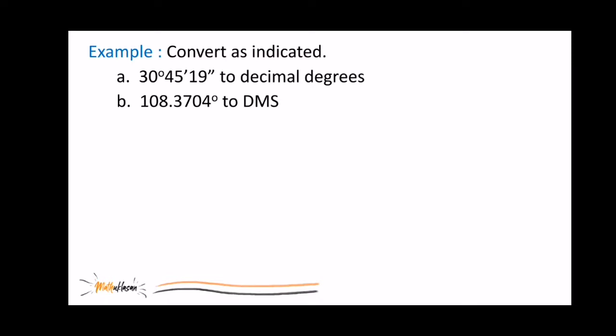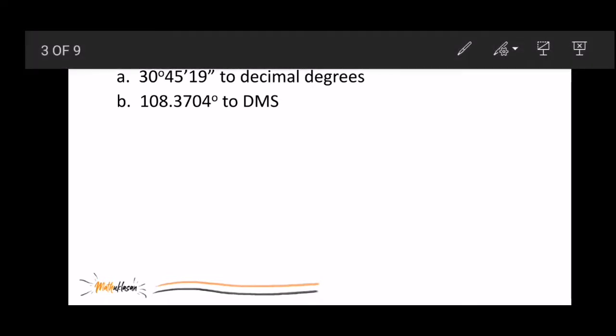Let's try converting each unit. In letter A, we need to convert this DMS value to decimal degrees. And to do that, all we need to do is to separate 30 degrees. Tapos, kailangan lang natin i-add yung mga decimal value ng 45 minutes at saka ng 19 seconds. Pero paano natin gagawin yun? Since ang basis natin ay degree, in 1 degree there is 60 minutes. Kaya, i-divide ko yung 45 minutes sa 60 minutes.